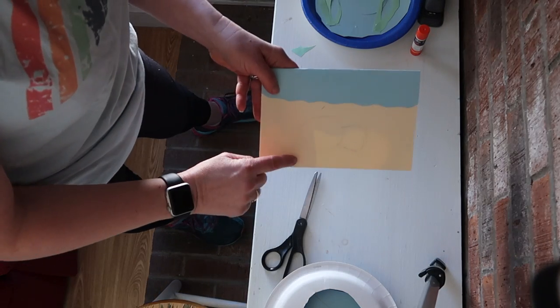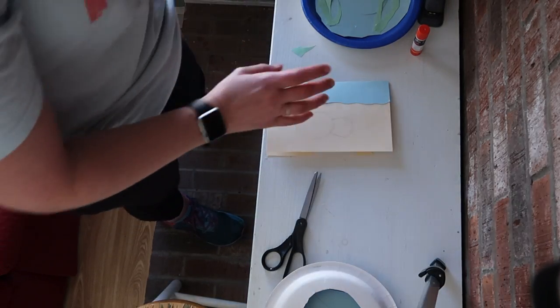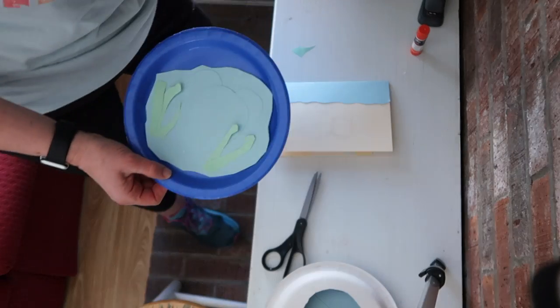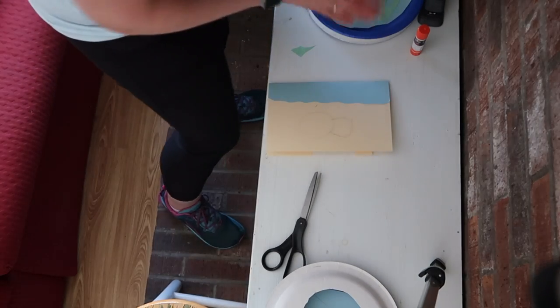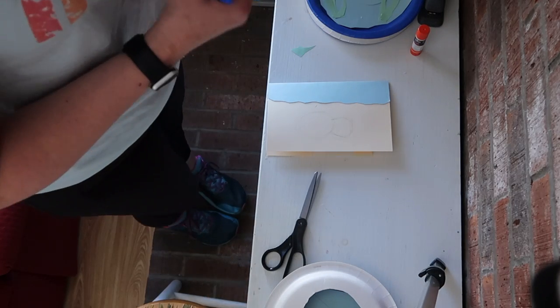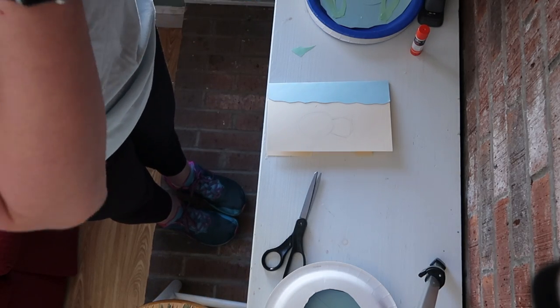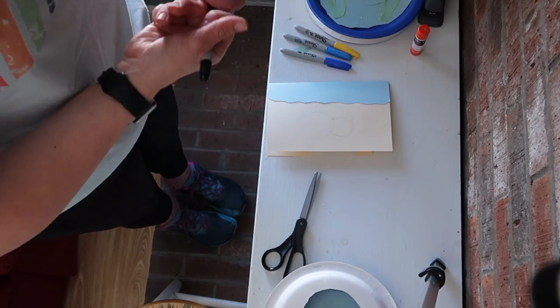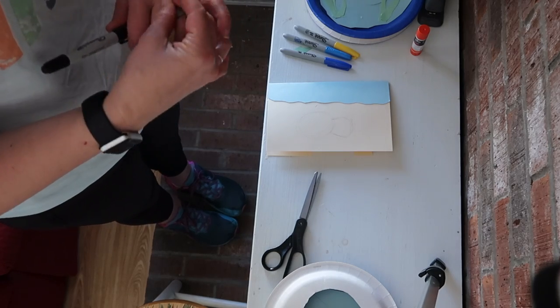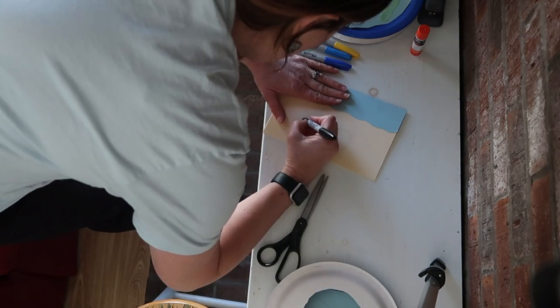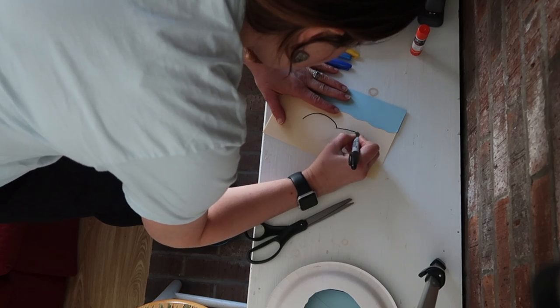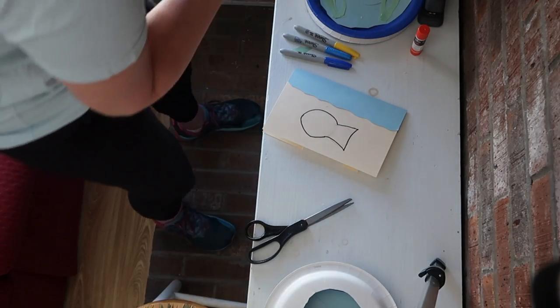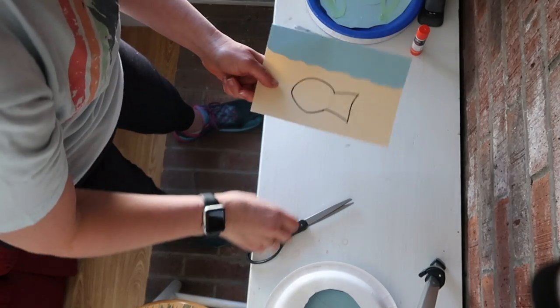Now I had my daughter trace out a fish for me because like I told you guys before, drawing is not my strong point. She can draw, I cannot. But if you're also like me and you can't draw, you can go to Pinterest and print out outlines and just do the best you can and have fun. Outline Dory to make it easier.